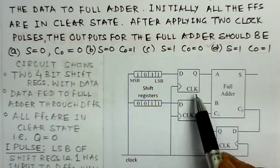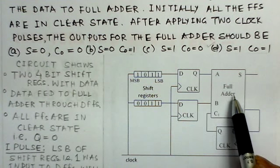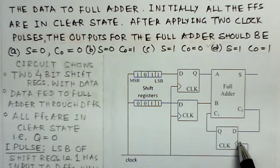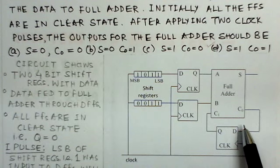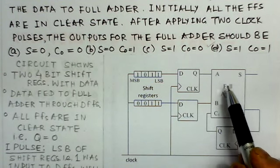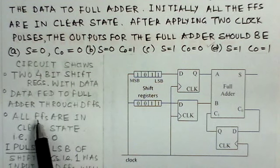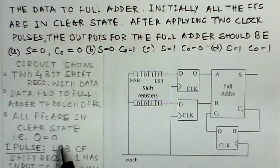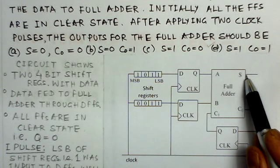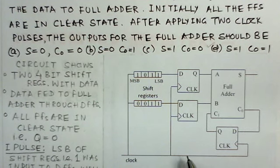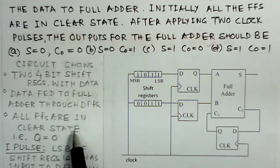The circuit also has D flip-flops — there are three D flip-flops. Two are connected to the A and B inputs of the full adder, and the third flip-flop is connected to the carry-in input. Then there is a full adder circuit. We need to determine what happens after two clock pulses — specifically, what would be the output data of sum and carry.